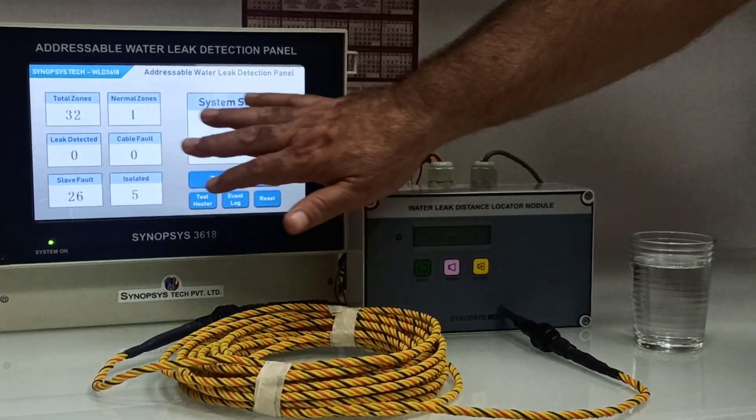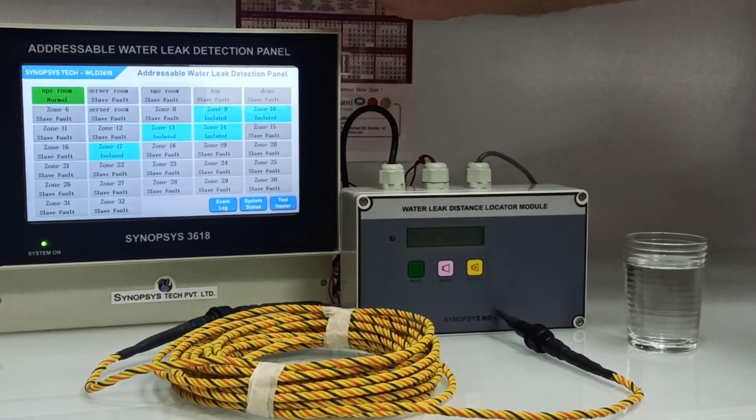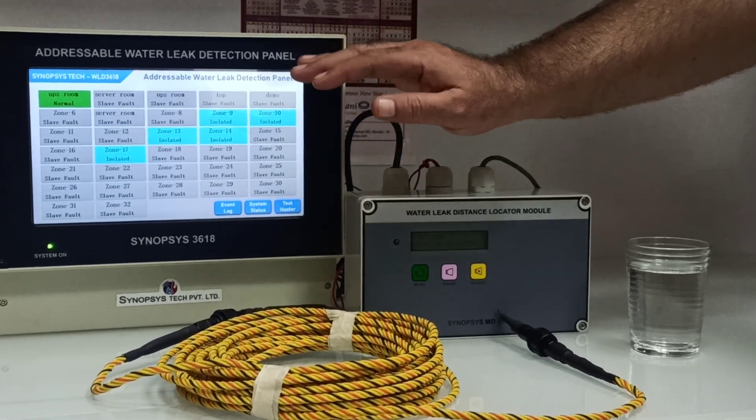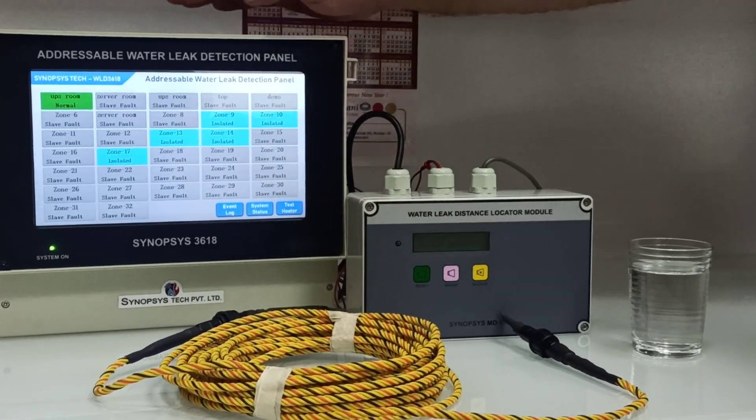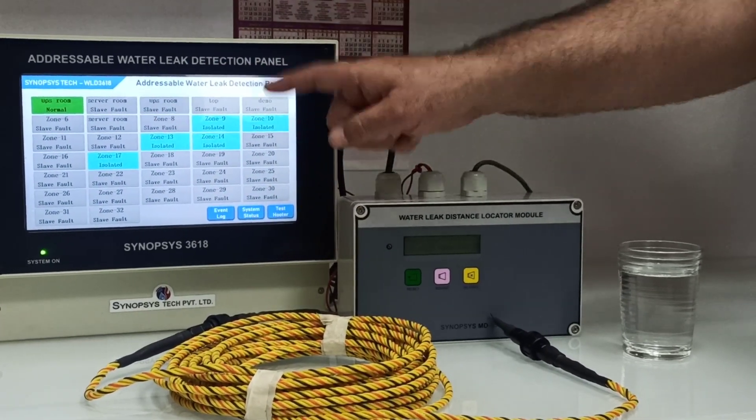This is the home screen which gives you the status and this is the zone status. This is the screen which will be always on. In this case all the 32 module status will be visible at one page at one go, all the time.